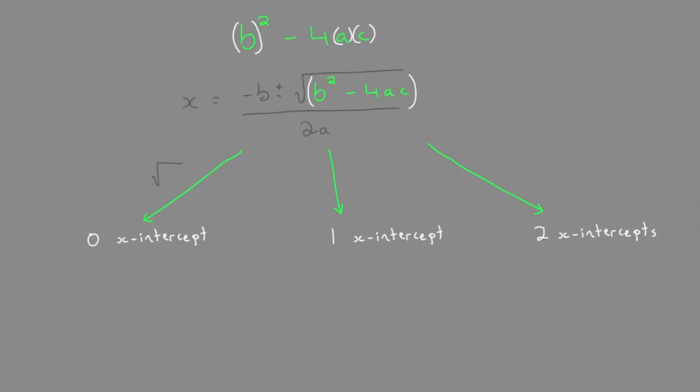Or when b squared minus 4ac is less than zero. That's another way of showing negative.